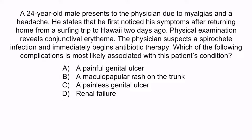From the question stem, hopefully you noticed that this patient recently went surfing in Hawaii and then developed myalgias, a headache, and conjunctival erythema. The physician suspected a spirochete infection, which should have immediately made you think of Leptospira interrogans, syphilis, and Borrelia burgdorferi, because these are all spirochetes. However, only Leptospira interrogans is associated with surfing in tropical areas and presents with this patient's symptoms. So the correct answer is D, renal failure.